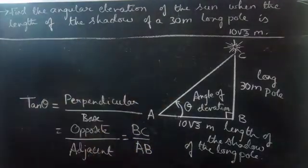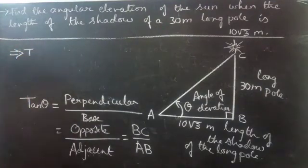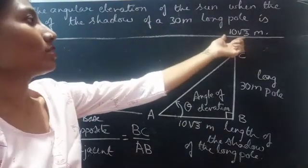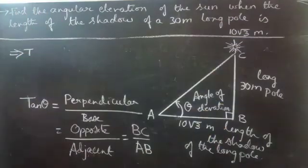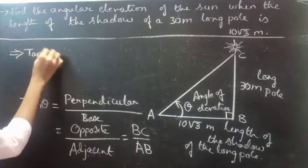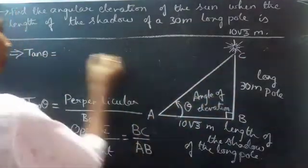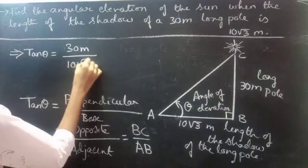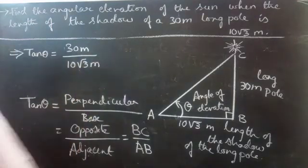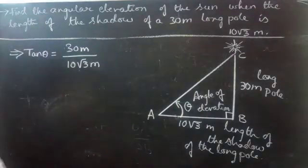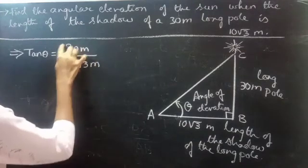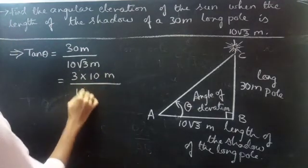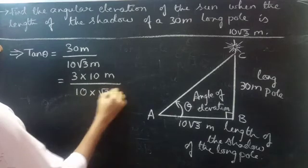From this, since we are given that the length of the shadow of the 30 meter long pole is 10 times root 3 meter, using this we will get tan theta equals to BC equals to 30 meter over AB equals to 10 times root 3 meter. You can write 30 meter as 3 times 10 meter divided by 10 into root 3 meter.